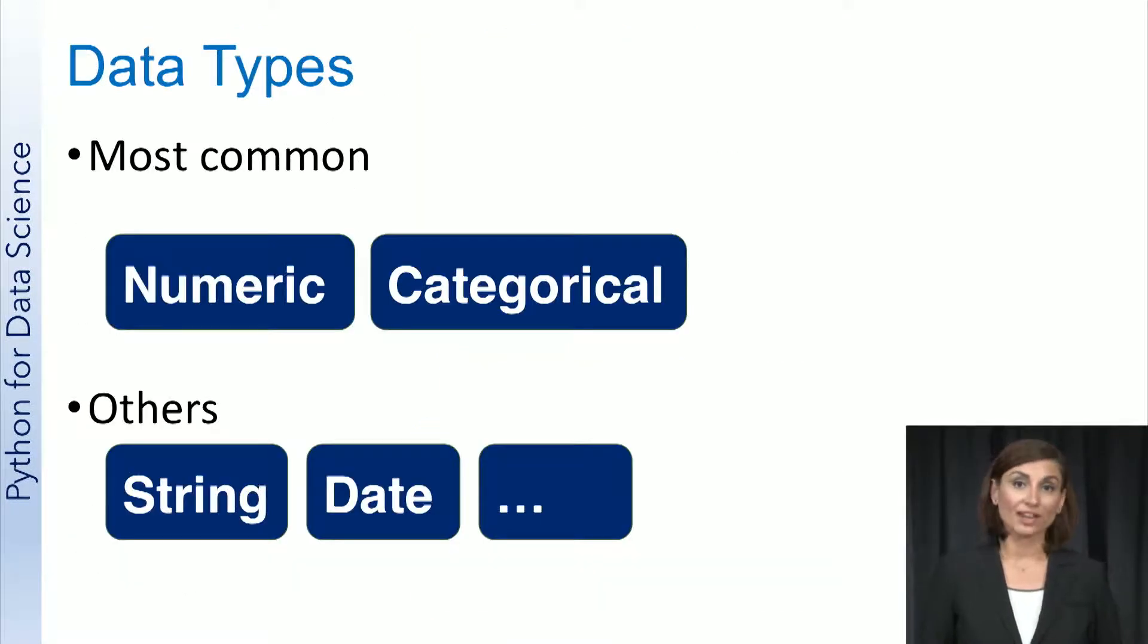An important point to emphasize about variables is that they are digital values with a type. Each variable has a data type associated with it. The most common data types are numeric and categorical. There are other data types as well, such as string and date, but we will focus on the more common data types of numeric and categorical in the context of data mining.